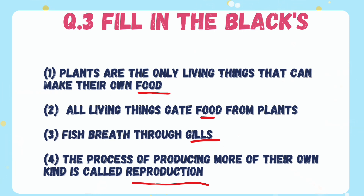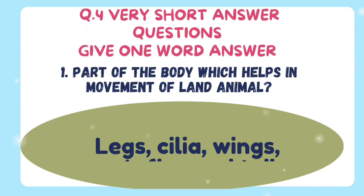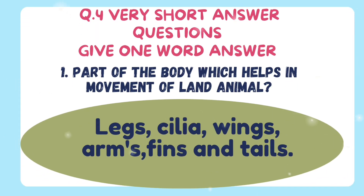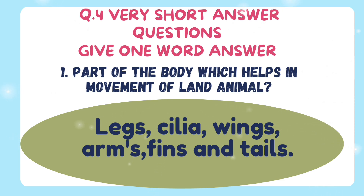Question number four: very short answer questions. Give one word answer. First one — part of the body which helps in movement of the land animal. Answer: legs. Also, claws, wings, arms, fins, and tails are the things that help animal movement.